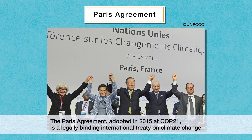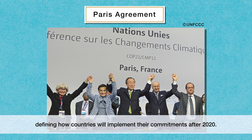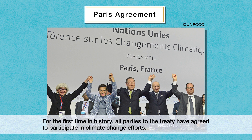The Paris Agreement, adopted in 2015 at COP21, is a legally binding international treaty on climate change, defining how countries will implement their commitments after 2020. For the first time in history, all parties to the treaty have agreed to participate in climate change efforts.